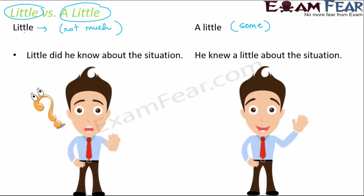Let us take an example: 'Little did he know about the situation.' This person hardly knew anything about the situation — he did not know much. If you look at the picture, he is confused and worried because he hardly knows anything. But in the second example, 'He knew a little about the situation' — this person has some knowledge. He looks happy and positive because he has some idea. So 'a little' has a positive meaning whereas 'little' has a negative meaning.